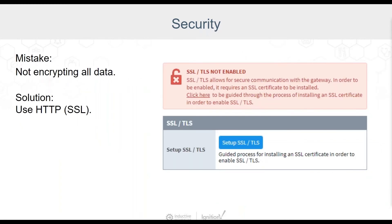The next mistake is leaving your data unencrypted. We highly recommend enabling SSL on your gateway. Secure Socket Layer, or SSL, is a widely used security protocol for data as it goes across a network or the internet — using this protocol will secure network traffic and help protect your data. You can turn on SSL in the config section of the gateway webpage; look for web server settings under Network. There is even a guided setup integrated into the gateway. Turning on SSL will encrypt all data sent over HTTP, including all browsers connecting with the gateway's web interface, and all Vision client and Perspective session communication. We provide instructions in our user manual for setting up SSL and obtaining a certificate.